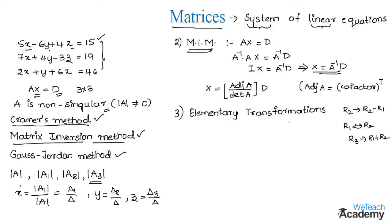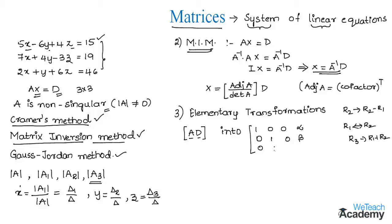To solve equations using this method, we write the augmented matrix [A|D], which is the combination of matrix A and the constant matrix D. Using elementary row transformations, we convert the augmented matrix into the form where the first row is [1, 0, 0 | alpha], the second row is [0, 1, 0 | beta], and the third row is [0, 0, 1 | gamma].